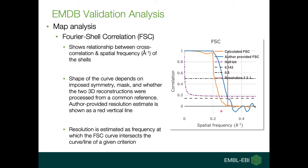We have three criteria to determine the resolution: the half-bit criterion, 0.143, and 0.5. If two half maps are given, then we plot both curves, calculate, and also deposit the FSC.